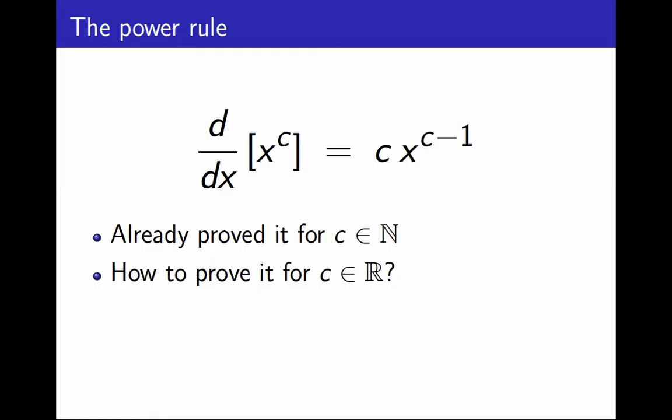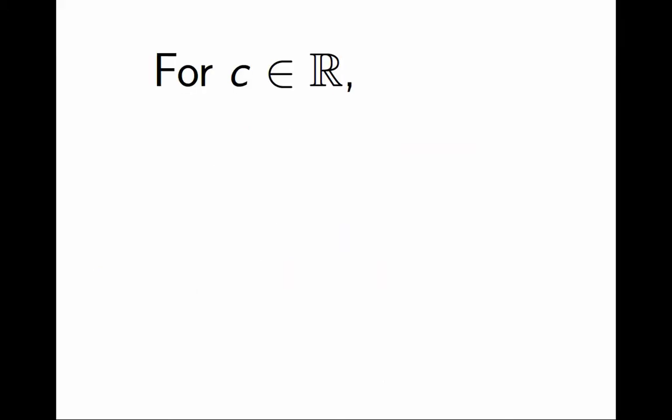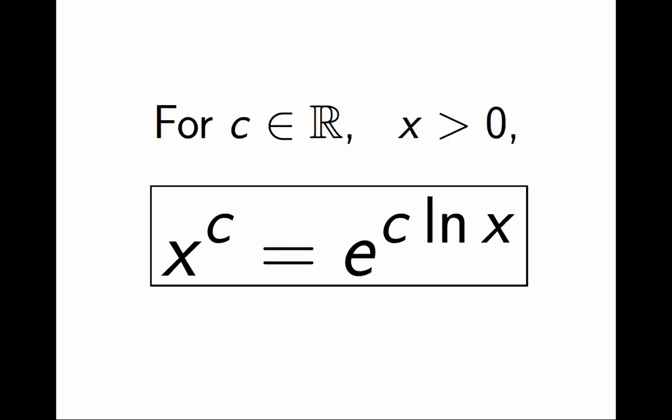The key to proving the Power Rule in general is to use this identity. For any real number c and for any positive number x, x to the c is defined as e to the c ln x.